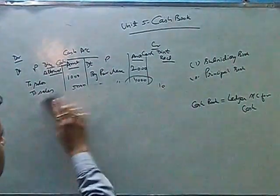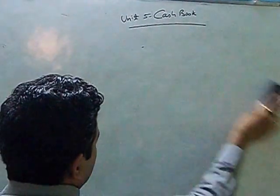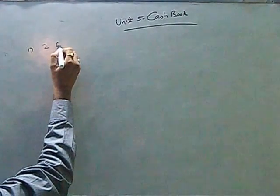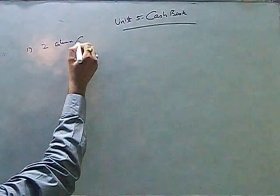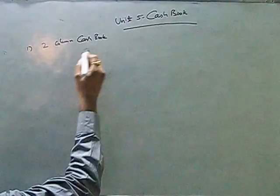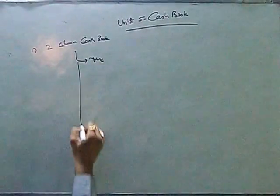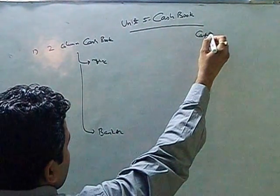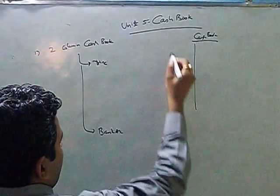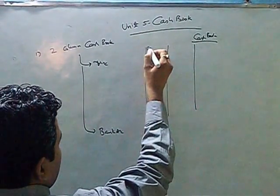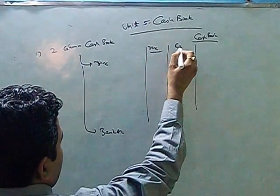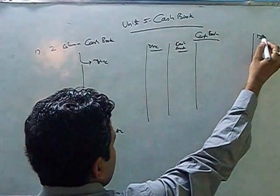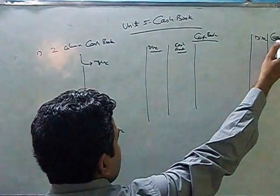The other way is like in this two column cash book we have shown discount as one more column. So one way is for a two column that you can either show discount or you can show bank account. So if here is your cash book you will have columns for discount and cash amount and similarly also columns for discount and cash.